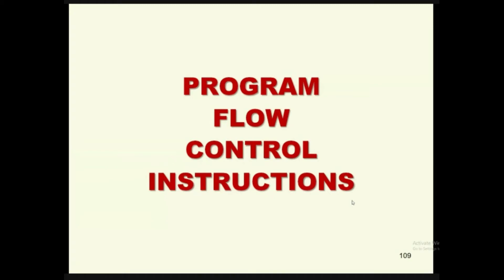In this presentation, we are going to look at the program flow control instructions. ARM instructions are broadly classified into data processing instructions, data transfer instructions, and the program flow control or branch control instructions. Data transfer instructions include MOVE instructions, moving data between the registers and between memory and registers. Data processing instructions include arithmetic, logical, bit-field, and shift instructions. Branch control instructions are going to change the execution flow.